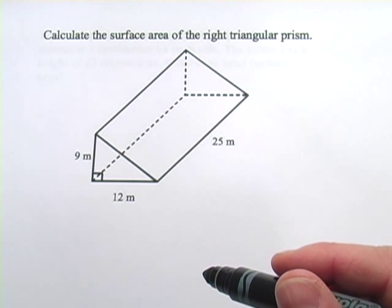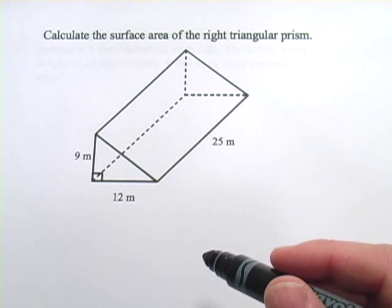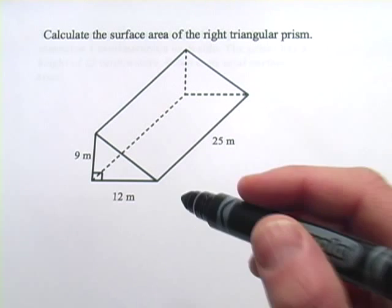In these problems, we're working on calculating the surface area of some triangular prisms and some other types of polyhedra. So let's take a look at this.